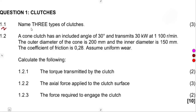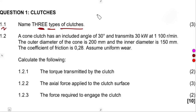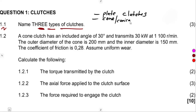Question 1.1: name three types of clutches. Those are the types that we had in our syllabus. We worked with the plate clutches, we also worked with the cone or conical clutches, and we also worked with the centrifugal clutches.